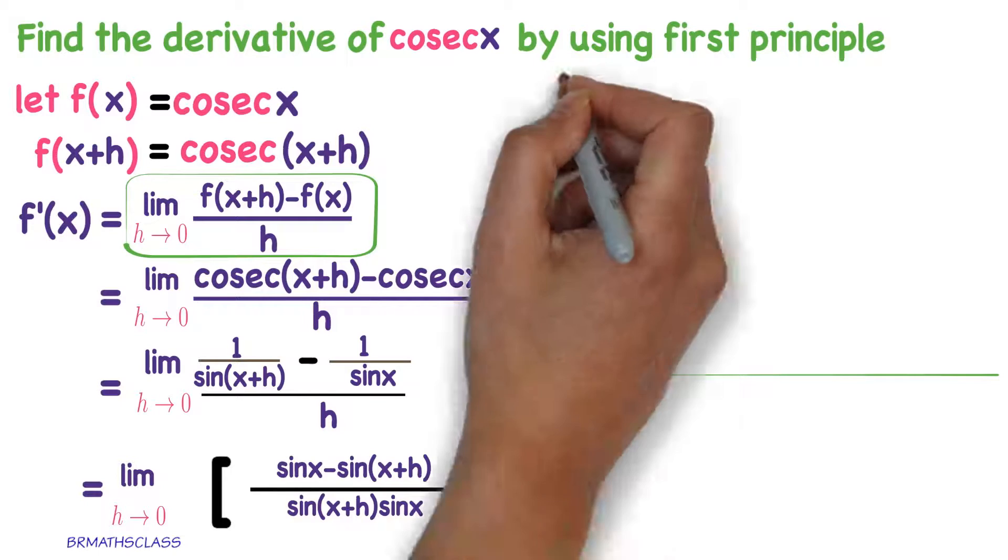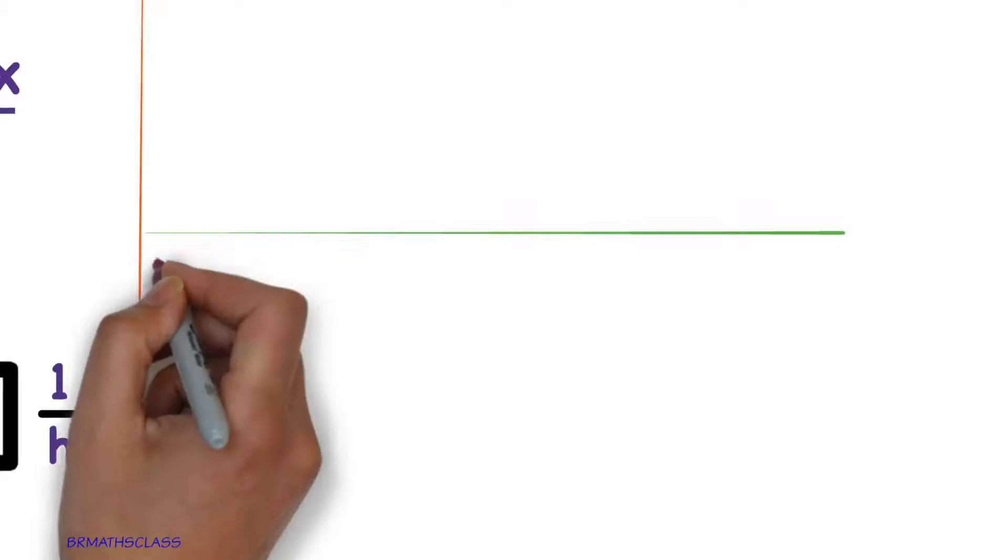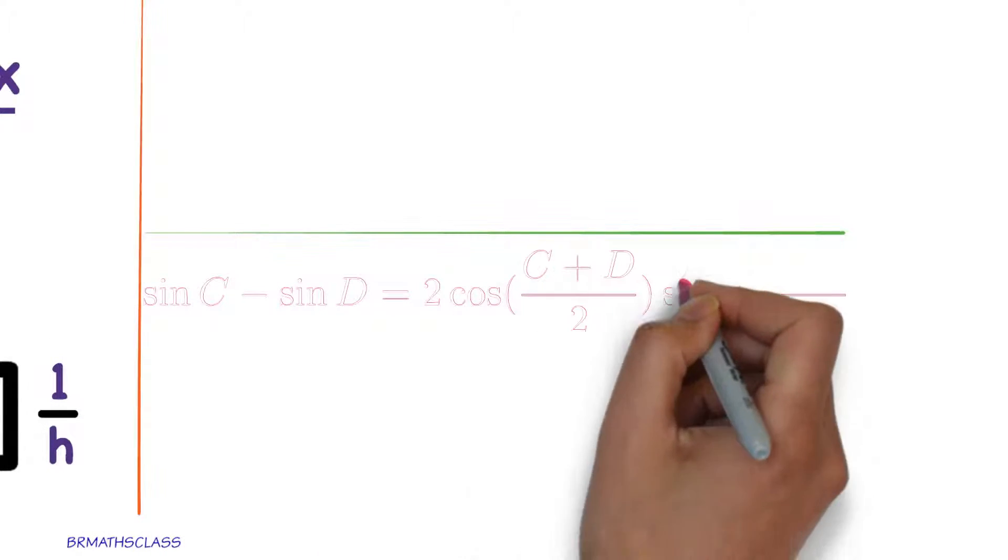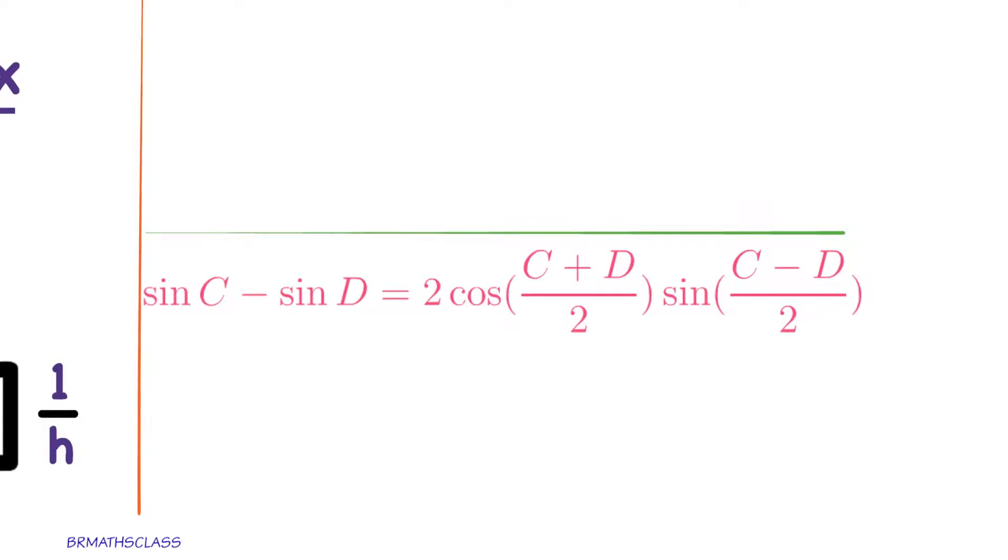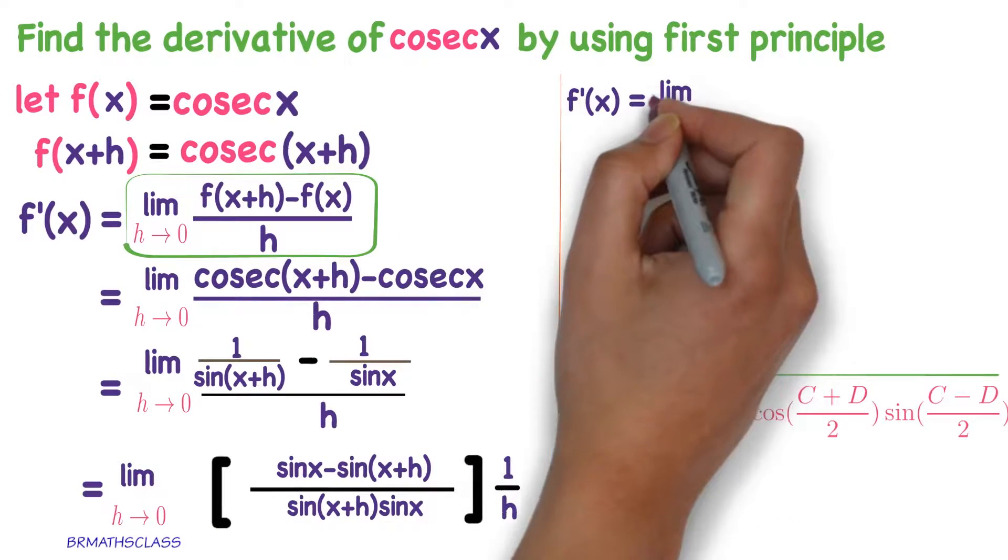If we continue this further, you observe that numerator part, it is of the form sin c minus sin d. What is the formula for sin c minus sin d? 2 cos c plus d by 2 into sin c minus d by 2. You apply the same thing in the numerator.